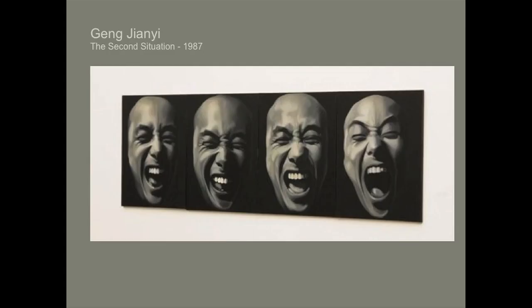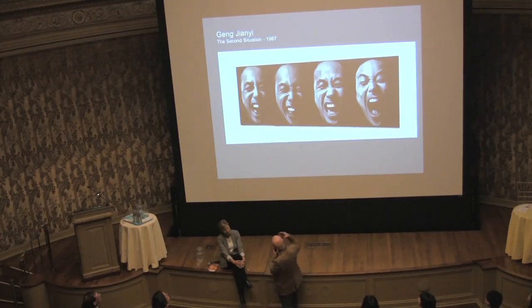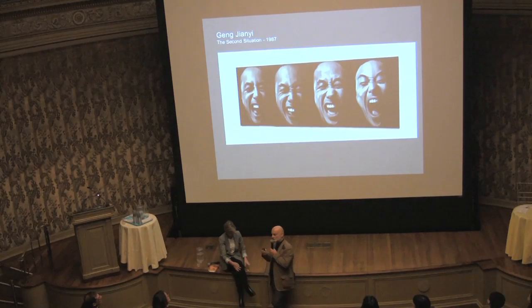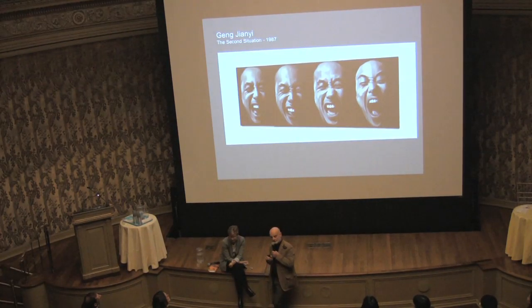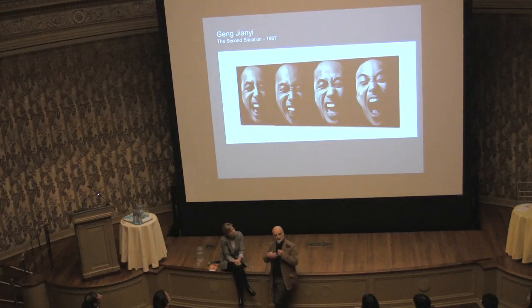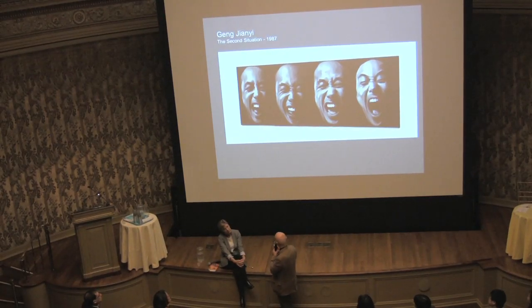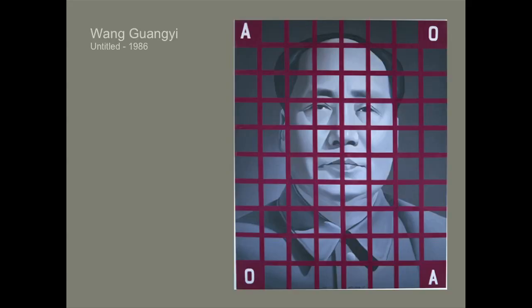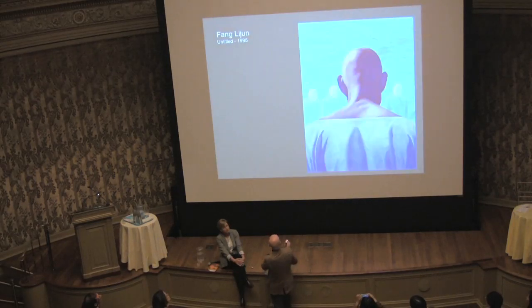We may now jump forward to the second half of the 80s. Most experts would agree that by that time Chinese artists had found a language of their own. This is a seminal group of works shown in the one and only nationwide contemporary art exhibition in Beijing, in the National Museum. These four works were publicized all over China and internationally as an indication of what kind of art prevailed at the time. We see art of a very early pop type, which was later developed further.